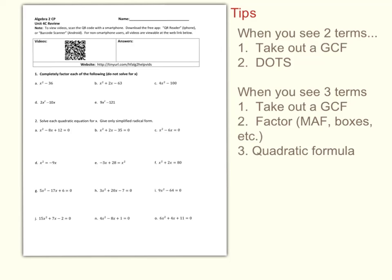Here's a review for your chapter 4C test and a little bit of video help for the chapter 4C review. Very quickly, I just want to talk about some tips that you're going to use when you factor. When you see two terms, you want to take out a GCF first, and then consider a difference of two squares. In certain other cases, you might see a difference or sum of cubes.